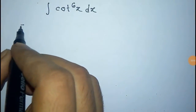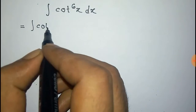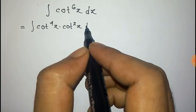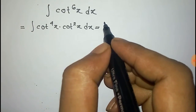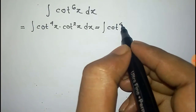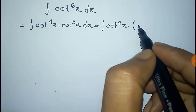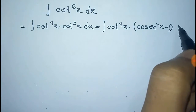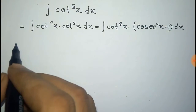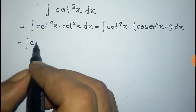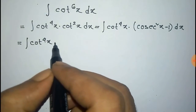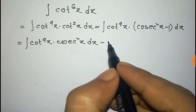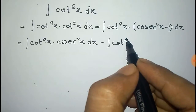We have to integrate cot to the power of 6x dx. We can write cot to the power of 6x as the product of cot to the power of 4x into cot square x. This equals the integration of cot to the power of 4x into cot square x dx minus the integration of cot to the power of 4x dx.